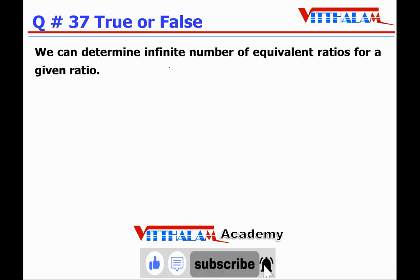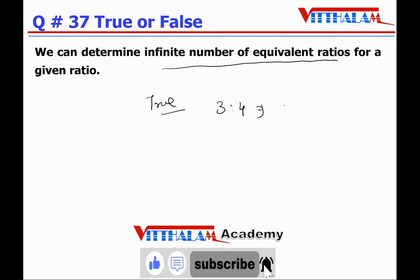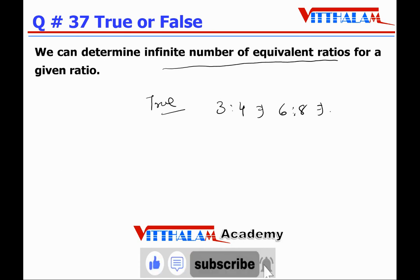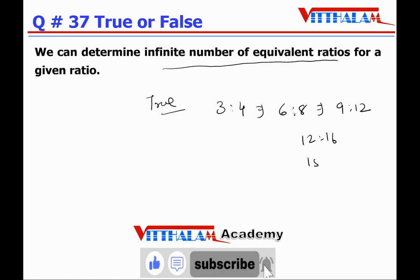Question 37: We can determine an infinite number of equivalent ratios for a given ratio — that's True. Let's say 3:4. It can be 6:8, which is equivalent. It may be 9:12, it may be 12:16, it may be 15:20. So it's an infinite number, and all are equivalent. Therefore it's True.